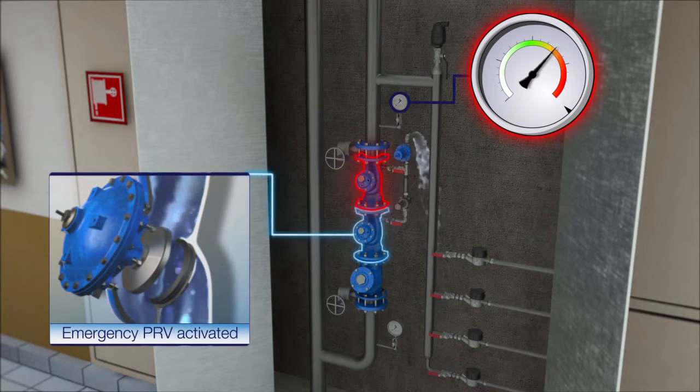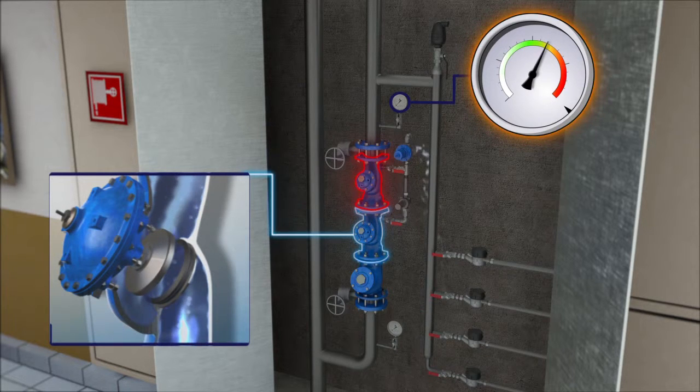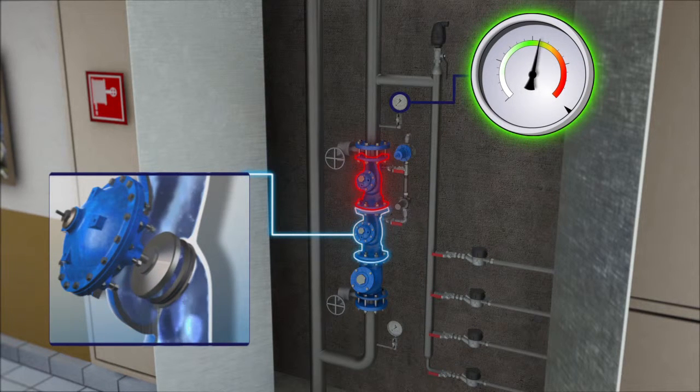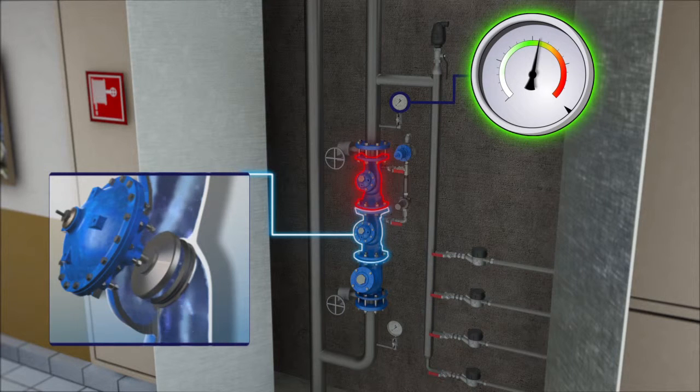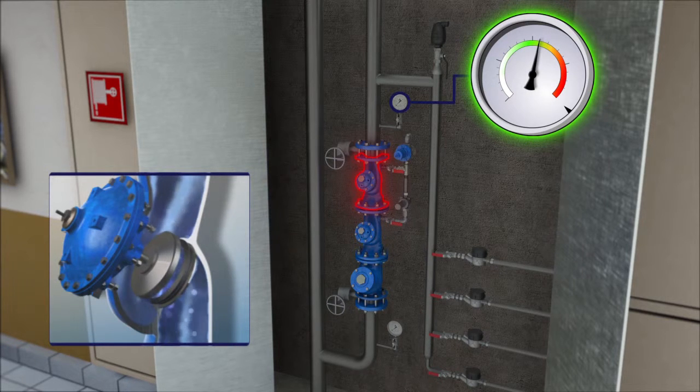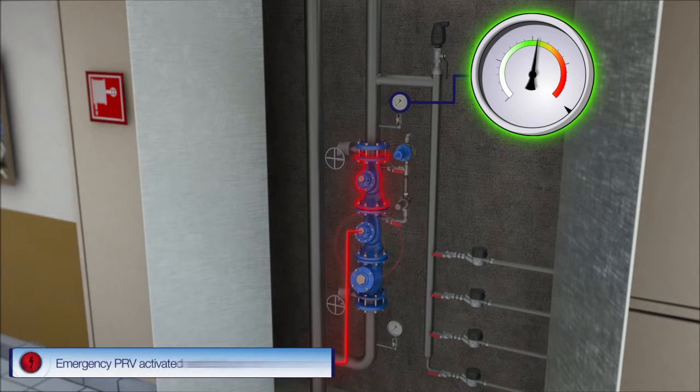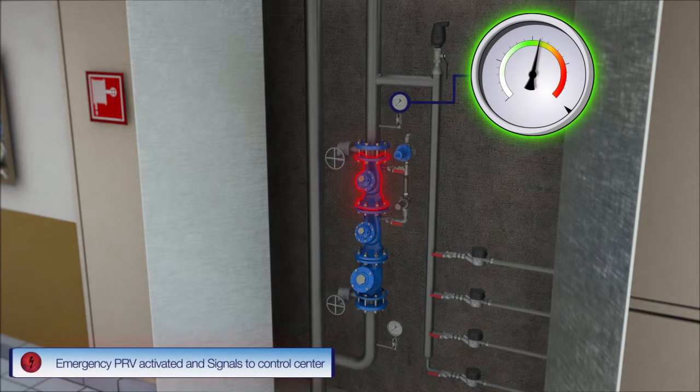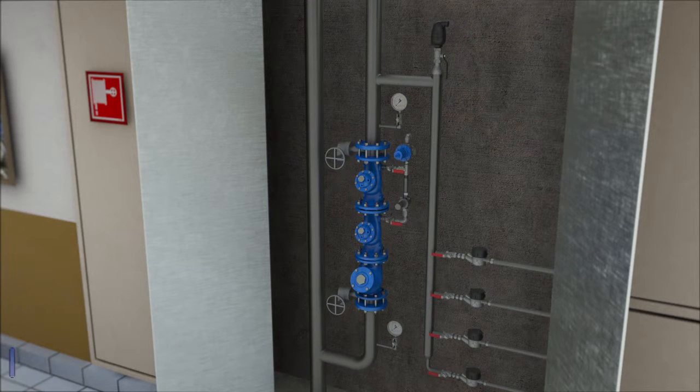The backup pressure reducing valve senses the undesired excessive pressure and kicks into operation, keeping the system in slightly higher but safe downstream pressure setting. A fault signal is sent to the building's control room by the limit switch, notifying the building's service team to address the problem.